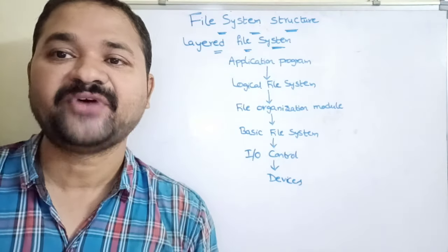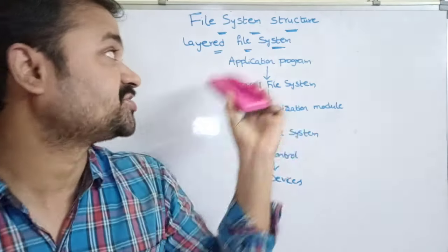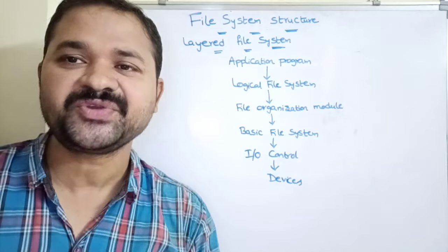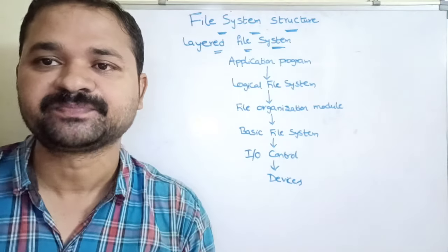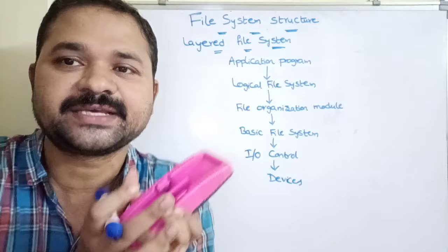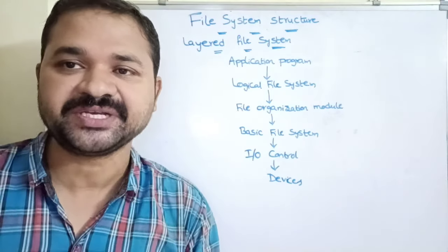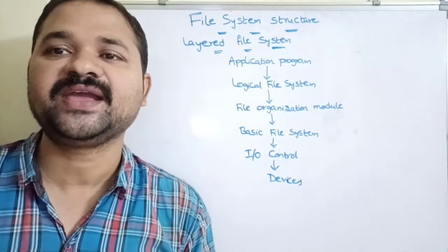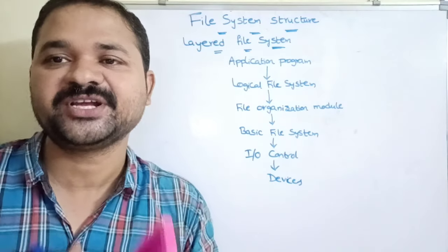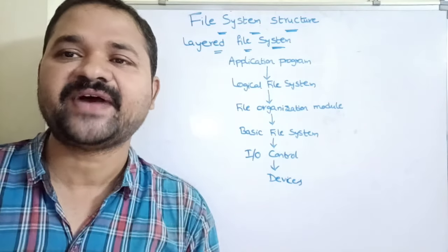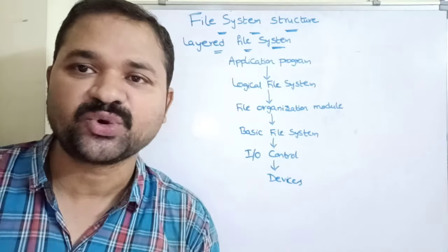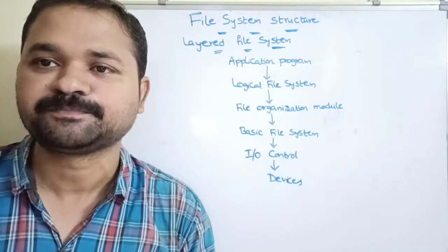Now let's see about file system structure. A file is a collection of related information. If you take a text file, it contains text-related information; if you take a C file, it contains C-related information. Generally, a file system can be stored on a secondary storage device such as a hard disk.